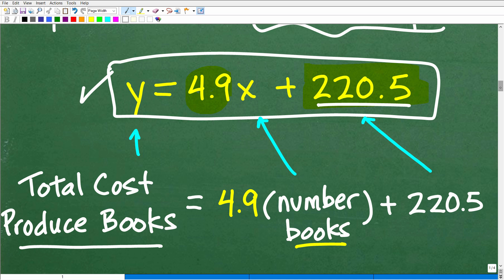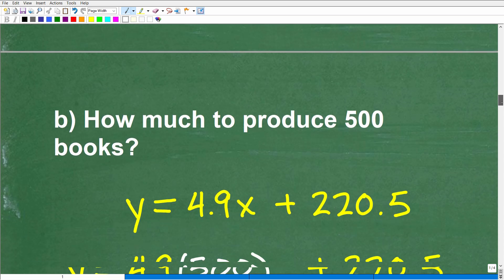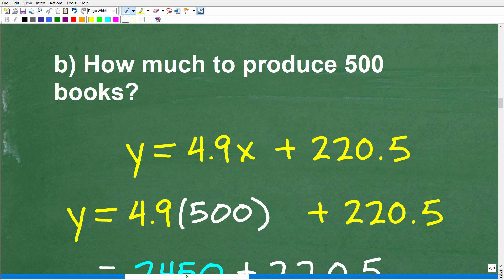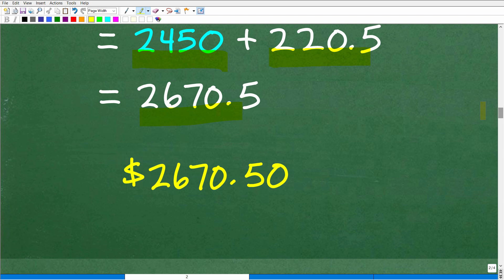Now, once we have our linear model here, our linear function, then we can answer the rest of these questions pretty easily. So let's move on to part b. Part b says how much to produce 500 books. So what's our input? Our input is going to be 500. And then when we plug in 500 for x into this linear function, it's going to give us our total cost. So it's pretty simple. This is how we use our linear model. We're going to plug in 500. That's the number of books we want to order up and produce. So what's the cost there? Well, it's going to be 500 times 4.9, which is $2,450, plus that initial setup cost of $220.50. So that total will be $2,670.50. That's how we get to this answer.